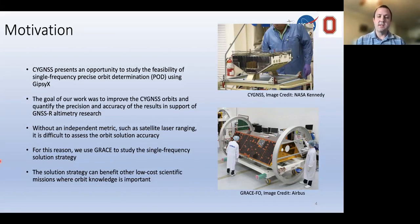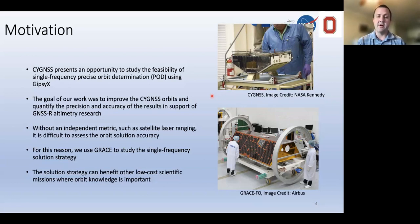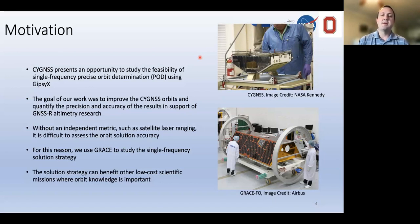The motivation here is to study the feasibility of single-frequency precise orbit determination, specifically in the GypsyX software. The overall goal is to improve Cygnus orbits, quantify associated errors, and determine suitability for GNSS-R altimetry research. The challenge is that Cygnus is a fairly low-cost mission with no independent metric. Dedicated altimetry missions have satellite laser ranging for independent evaluation, but Cygnus does not. So we've chosen to use GRACE as an analog.